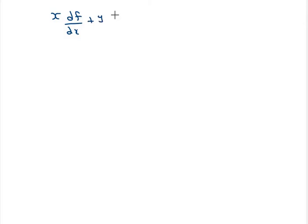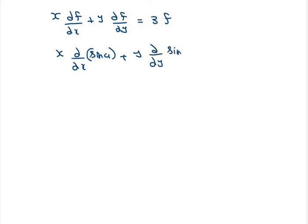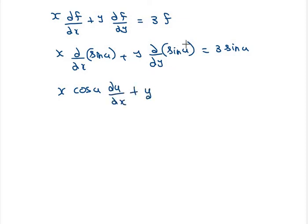So x ∂f/∂x plus y ∂f/∂y equals 3 sin u. Now differentiating sin u with respect to x and y: x times cos u times ∂u/∂x, plus y times cos u times ∂u/∂y, equals 3 sin u.